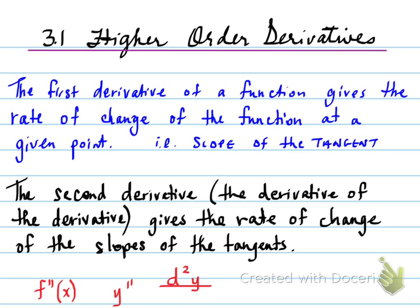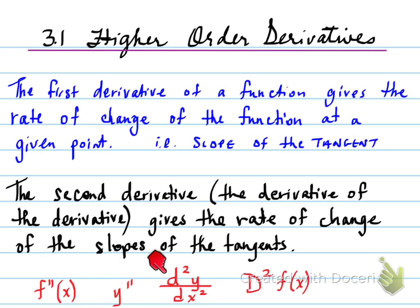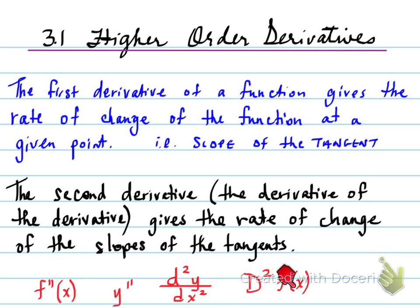Looking at the bottom, you'll see notation for a second derivative: f double prime of x, y double prime, d²y over dx squared which means a second derivative, and d²f at x which means the second derivative of f at x. So this is different notation which implies the second derivative.